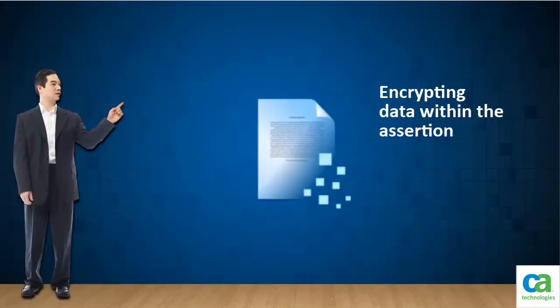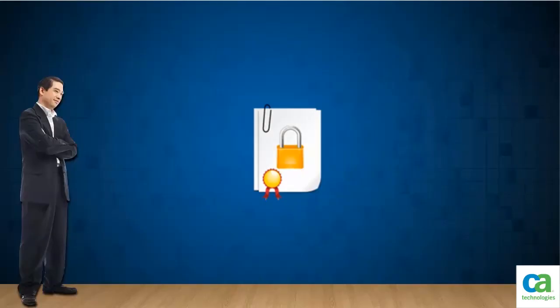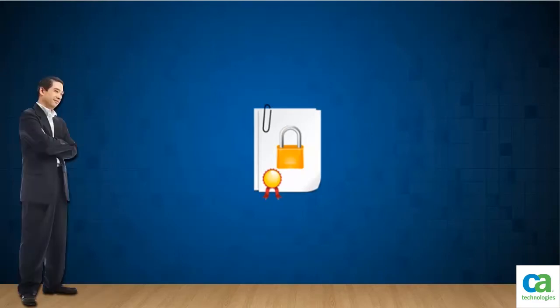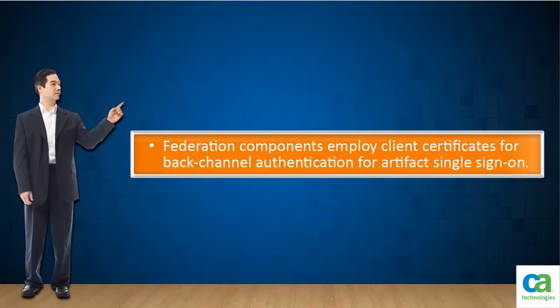Securing an assertion and encrypting data within the assertion is a critical part of partnership configuration. In Federation, private keys and certificates are required for the following key tasks: Federation components use private key or certificate pairs for signing, verification, encryption, and decryption of entire assertions or specific assertion content. Federation components also employ client certificates for back-channel authentication for artifact single sign-on.